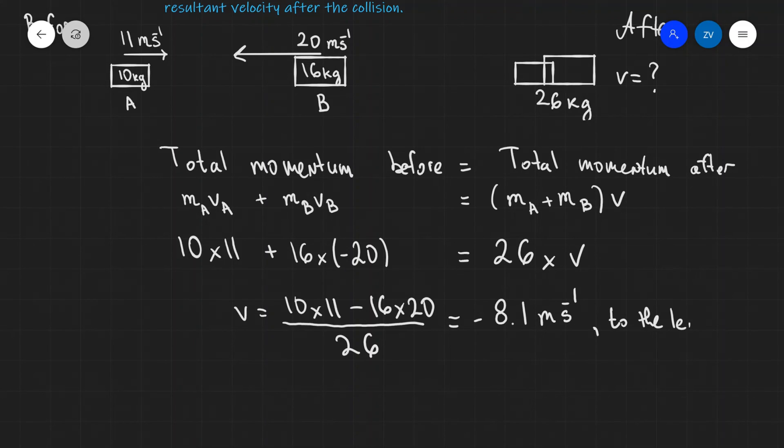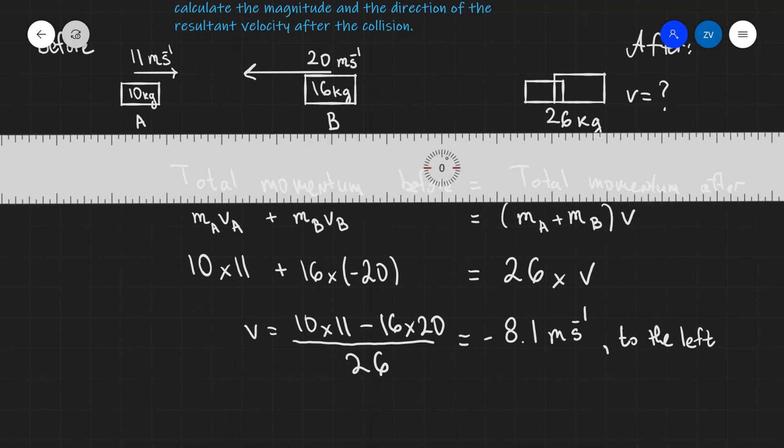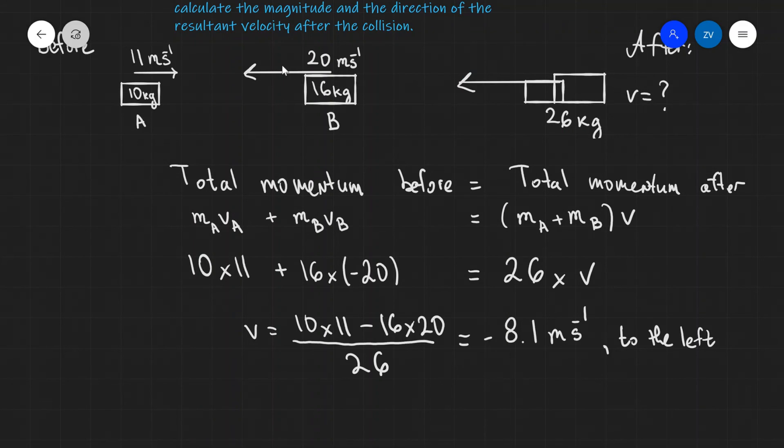Just to be absolutely sure, after those two objects collide, the resultant speed is 8.1 meters per second pointing to the left. Hopefully conservation of linear momentum makes sense. If there are any questions about this problem, please feel free to drop a comment and thank you very much for watching.